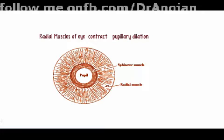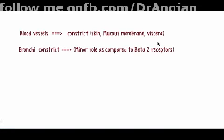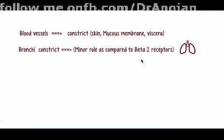Contraction of the radial muscles results in dilation of the pupil. Other alpha-1 effects involve contraction or constriction: it causes constriction of blood vessels, producing vasoconstriction in skin, mucous membranes, and viscera. It also causes bronchoconstriction.